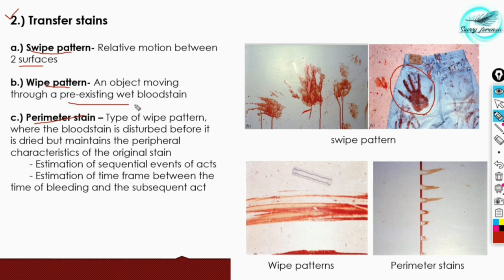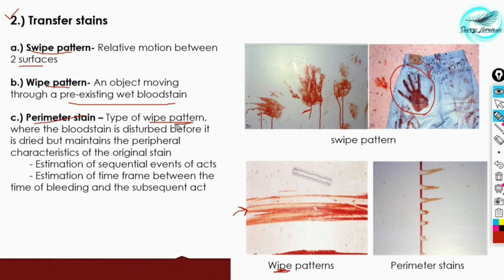The second transfer subtype is the wipe pattern — an object moving through a pre-existing blood stain. Blood is already present on the floor, and an object moves through that pre-existing wet blood stain. That is termed a wipe pattern, as we are wiping or moving something through it.